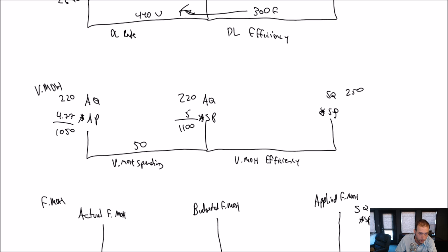Now, again, looking at what's different. We spent $4.77 an hour. We expected to spend $5 an hour. We were cheap. This is good. This is favorable.